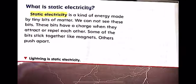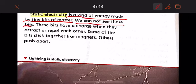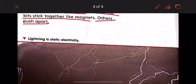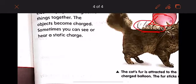Static electricity is a kind of energy made by tiny bits of matter. You cannot see these bits. They have a charge — when they attract and repel each other, it's like a magnet. Some bits stick together like magnets, others push apart. Lightning is an example of static electricity.